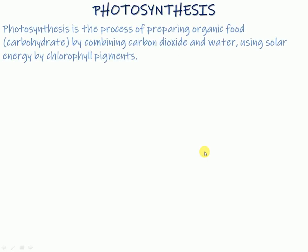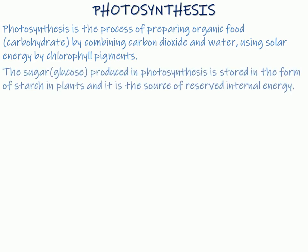Photosynthesis is the process of preparing organic food, that is carbohydrate, by combining carbon dioxide and water using solar energy by chlorophyll pigments. The sugar that is glucose, produced in photosynthesis, is stored in the form of starch in the plants and it is the source of reserved internal energy.